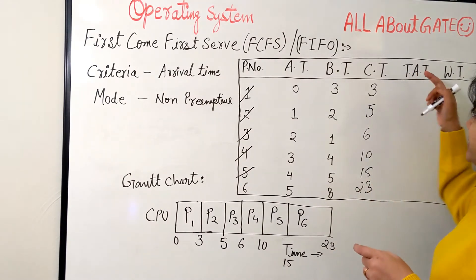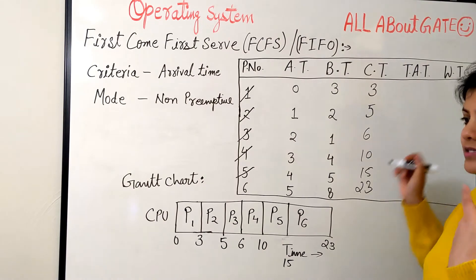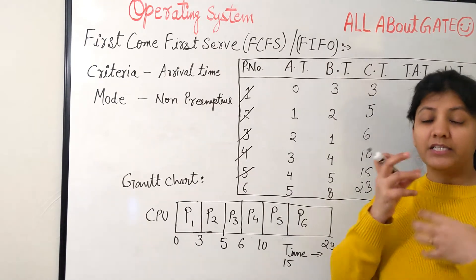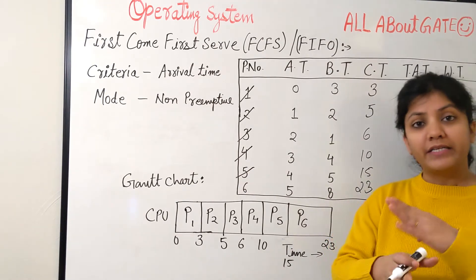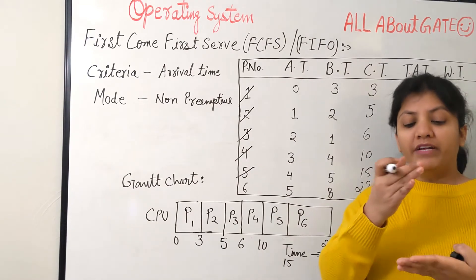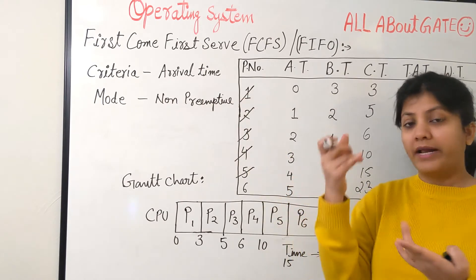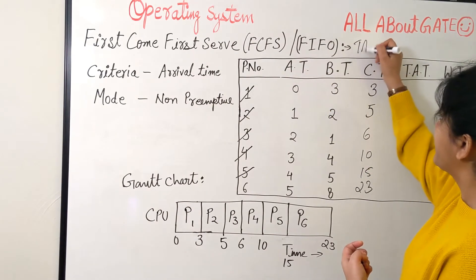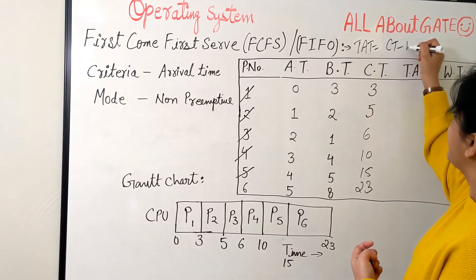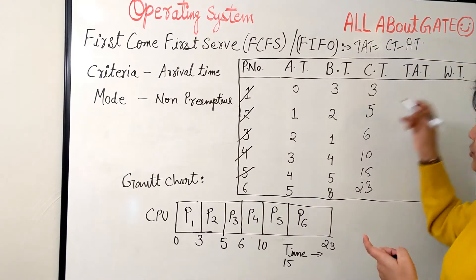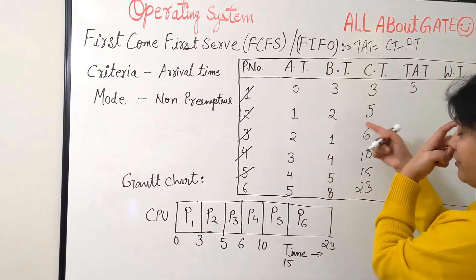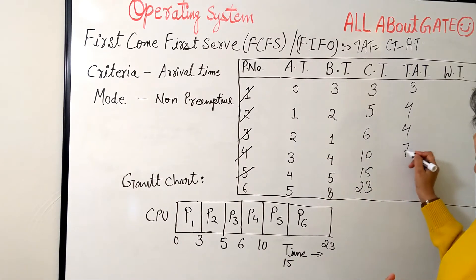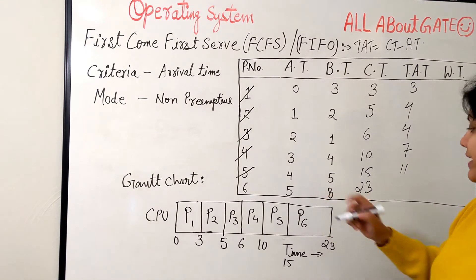Turnaround time is the total time a process spends in the system — both waiting and executing. It equals completion time minus arrival time. Applying this: P1 = 3−0 = 3, P2 = 5−1 = 4, P3 = 6−2 = 4, P4 = 10−3 = 7, P5 = 15−4 = 11, P6 = 23−5 = 18.